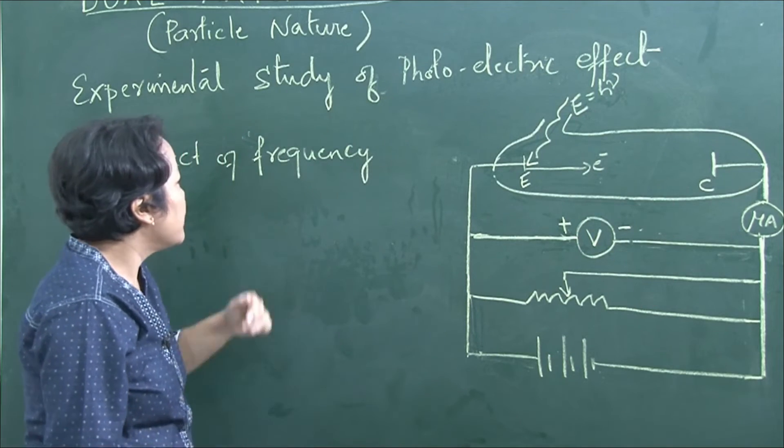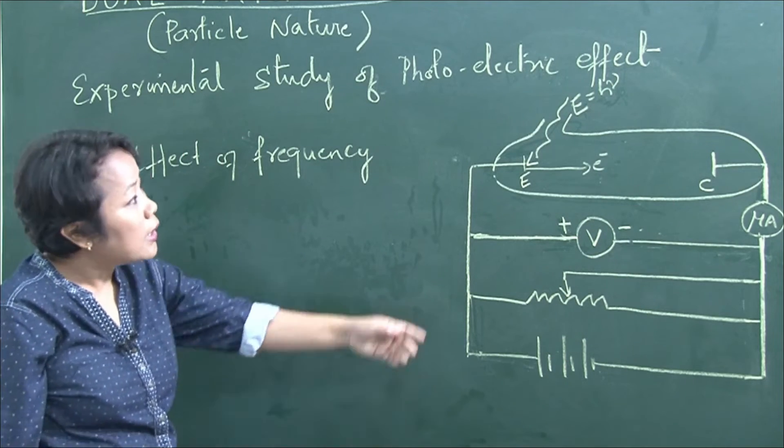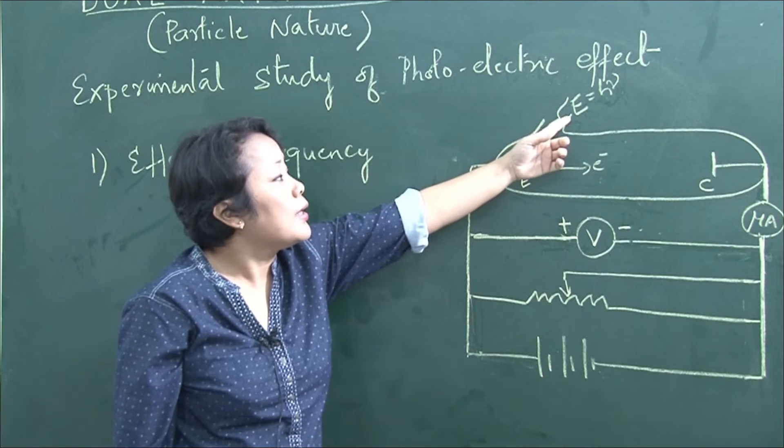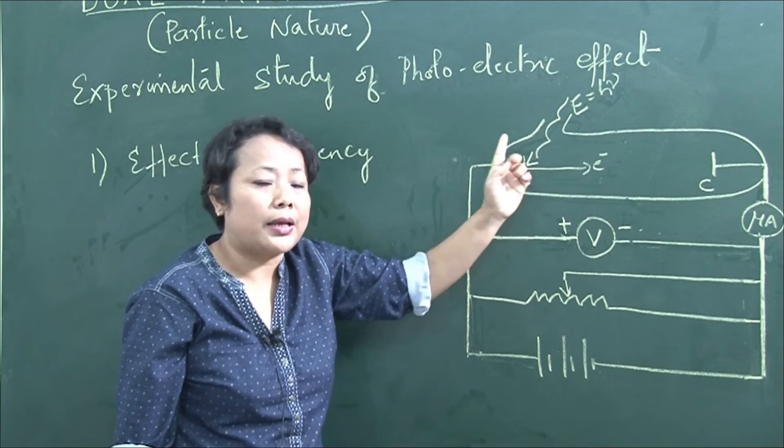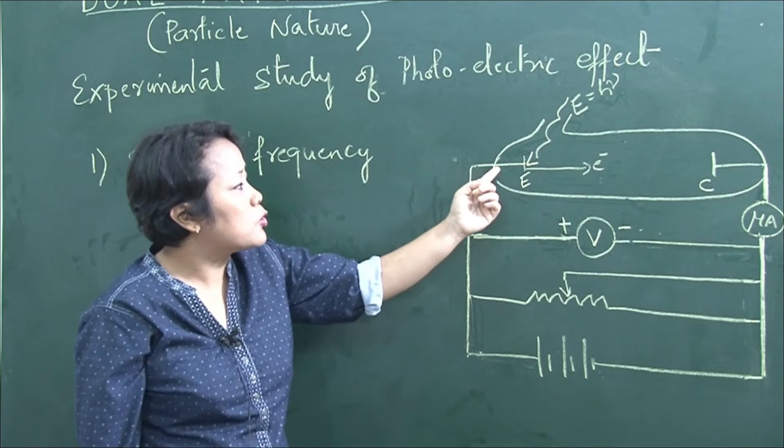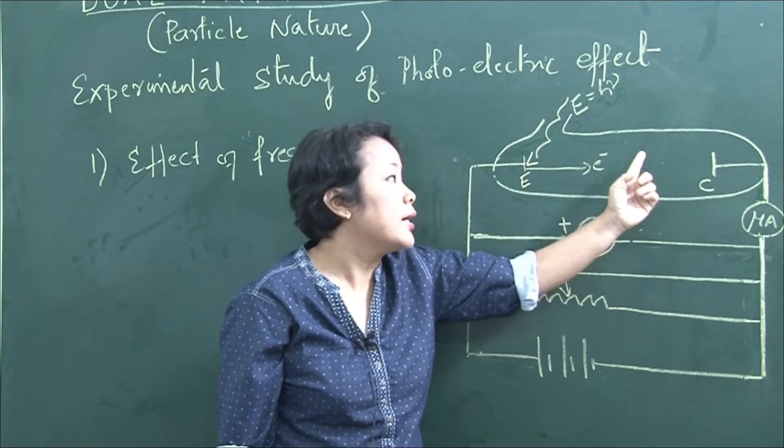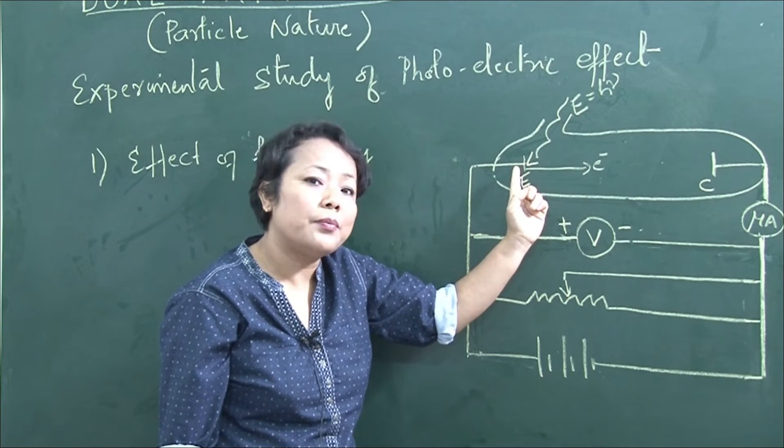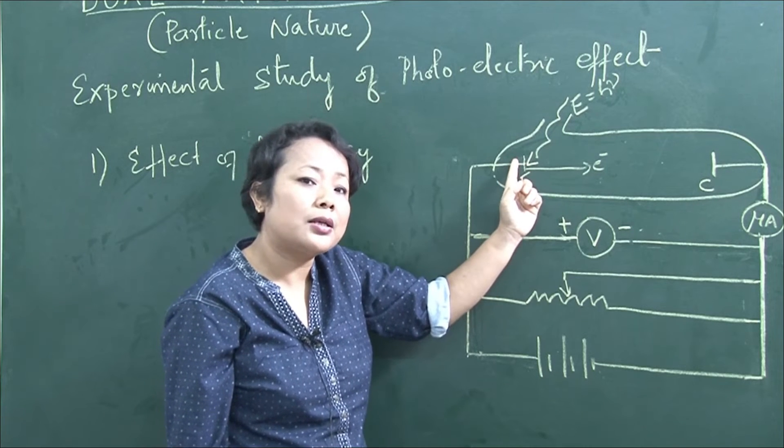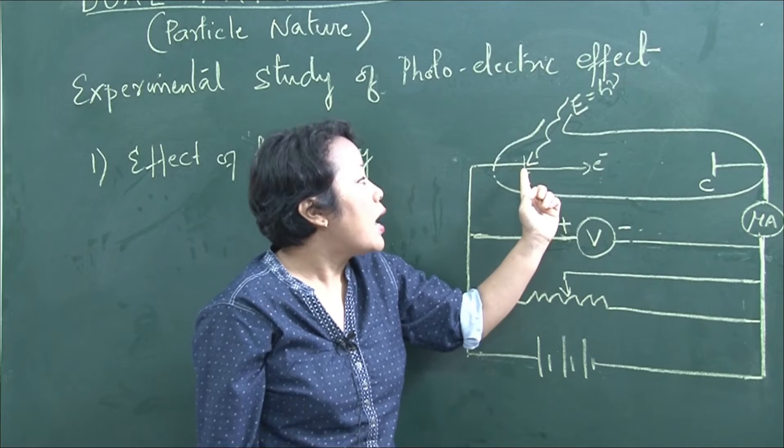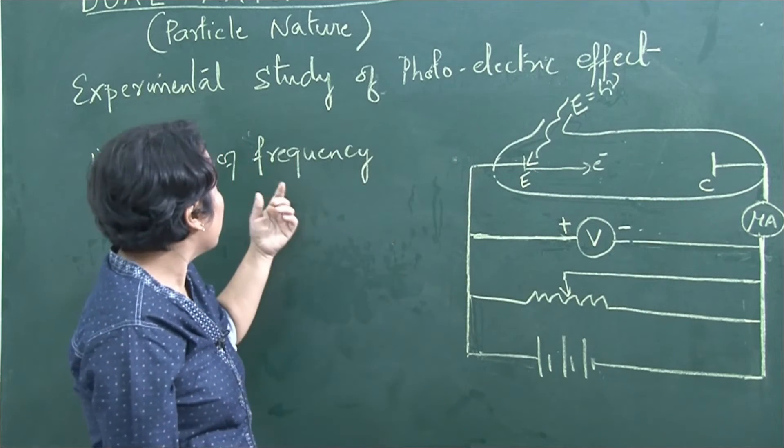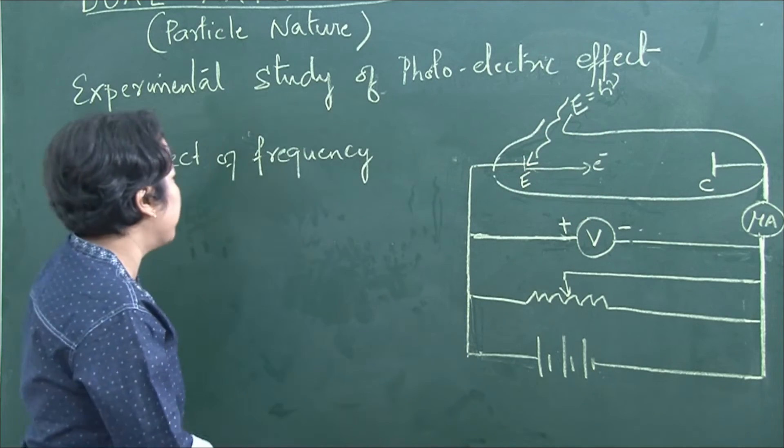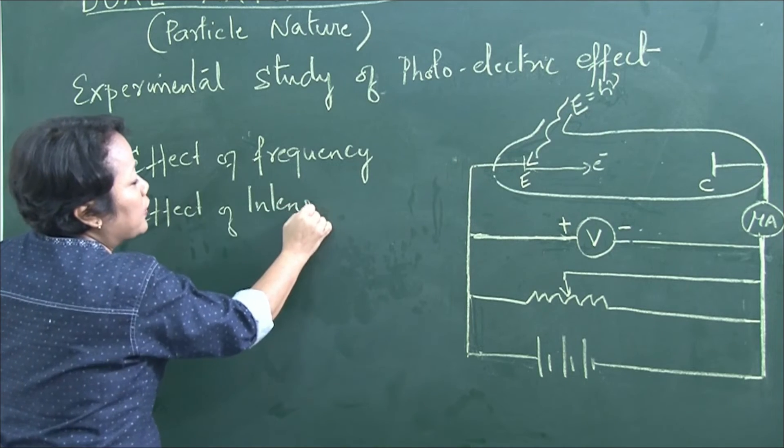Effect of frequency: E equals h nu, where nu is the frequency. The energy of the photon determines whether photoelectrons will be emitted. The frequency affects the emission of photoelectrons from the metal surface.